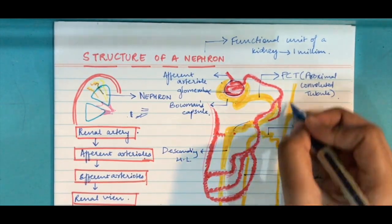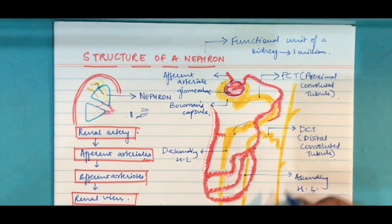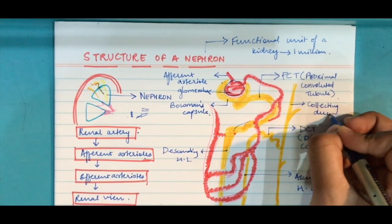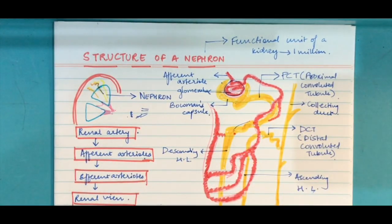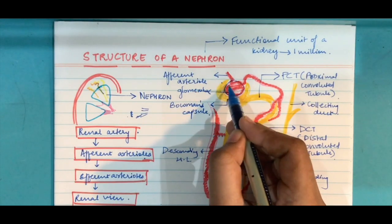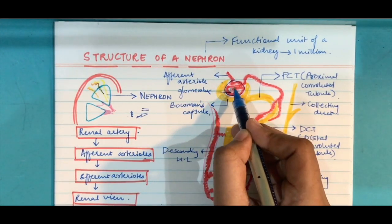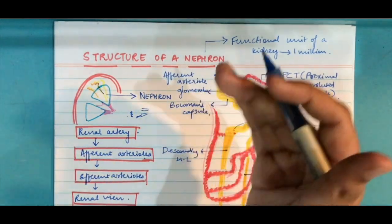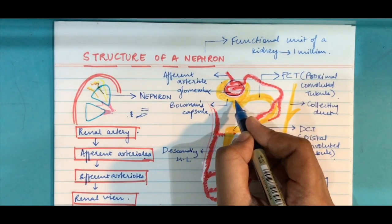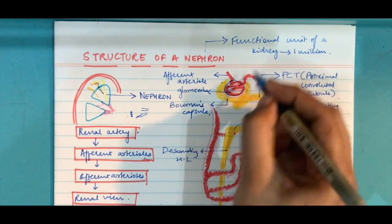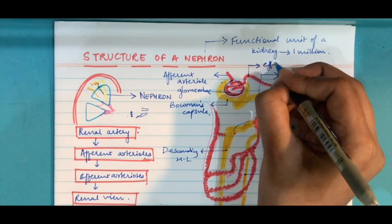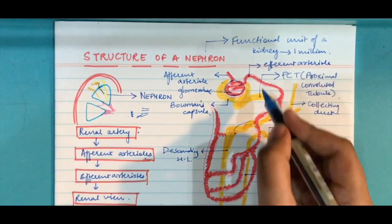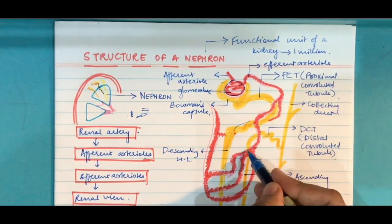DCT moves into the straight line which you're seeing known as collecting duct. This is just naming the entire thing. Now you know that this entire blood has come here from glomerulus, this blood is moving out. This is now purified blood because all the impurities that the body needed to remove went into the Bowman's capsule. This pure blood comes out from efferent arteriole.